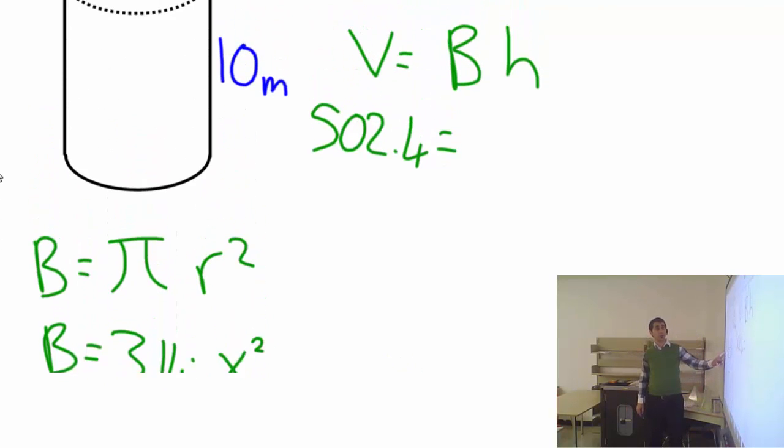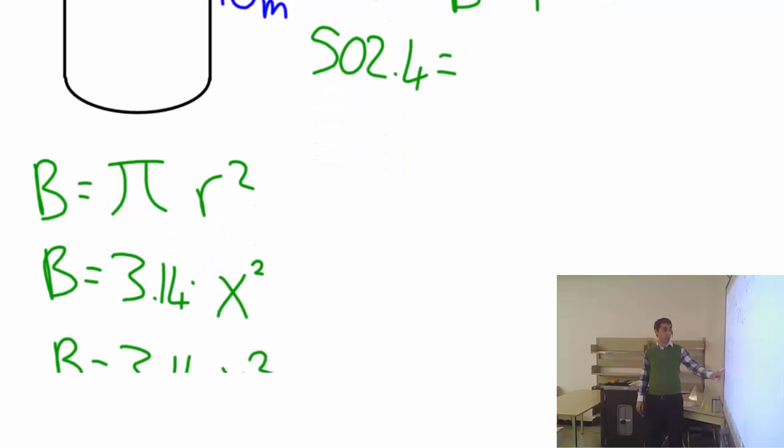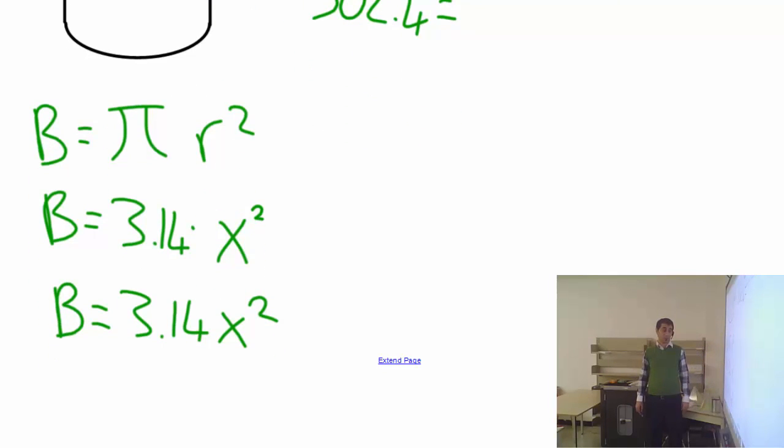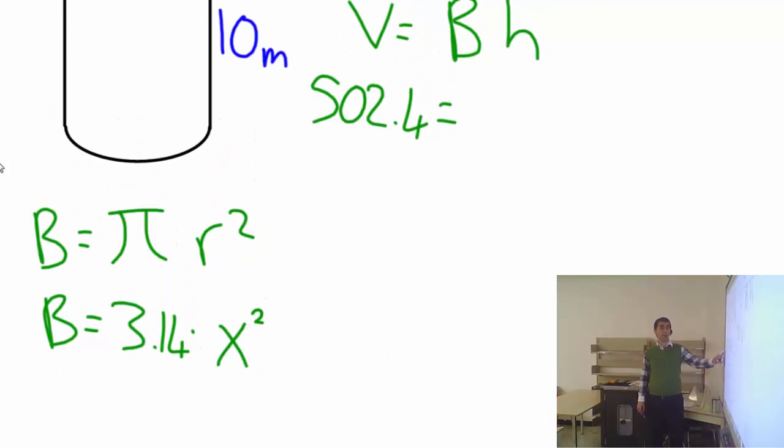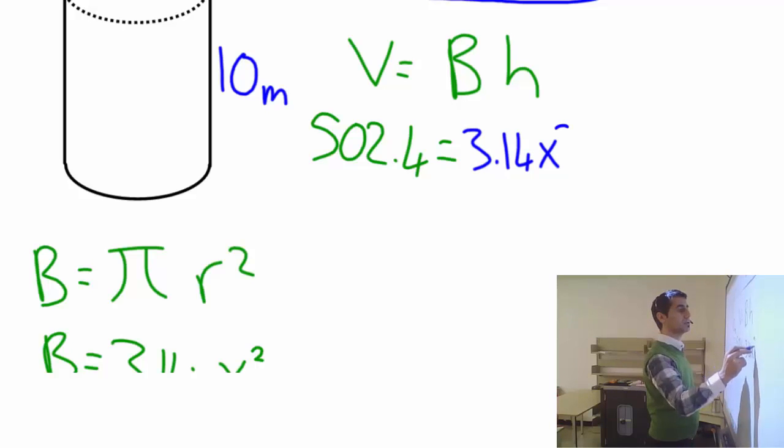So let's go back. I need to write down the B, but now I know B is 3.14 x squared. That's what I'm going to write down here: 3.14 x squared times I know the height which is 10.